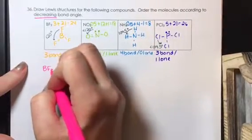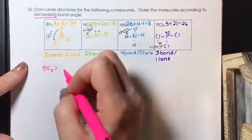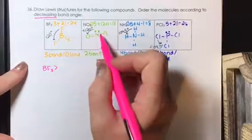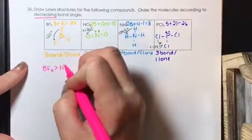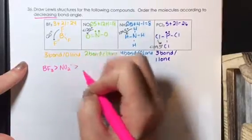BF3 has the greatest bond angle at 120, and then because of the lone pair, the nitrite has an angle just under 120 degrees.